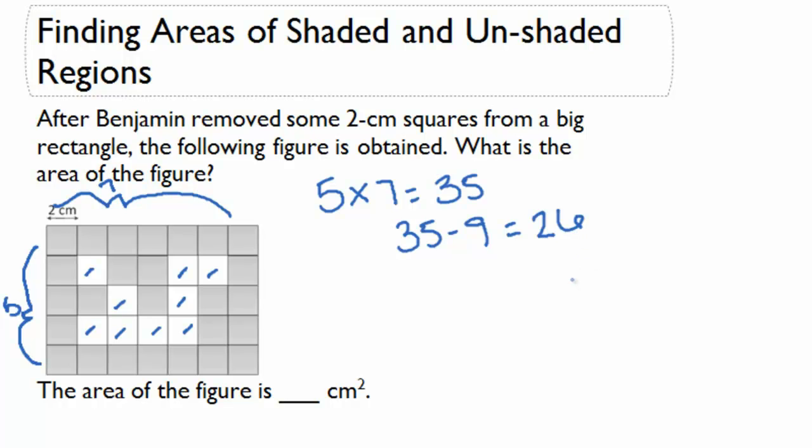If he has 26 squares left and we want to know what the area is, we're going to need to know the area of each square. Now each square is 2 cm by 2 cm. So we're going to multiply 2 cm times 2 cm to find the area, which is 4 cm squared for each square.